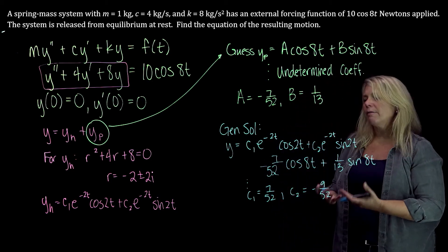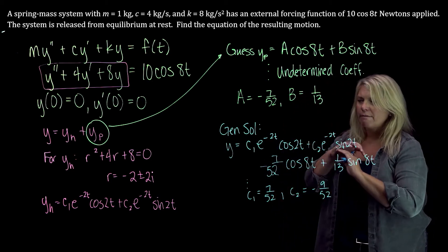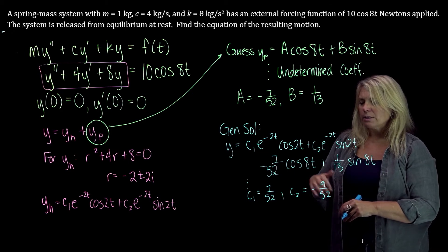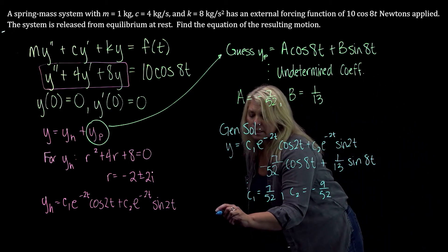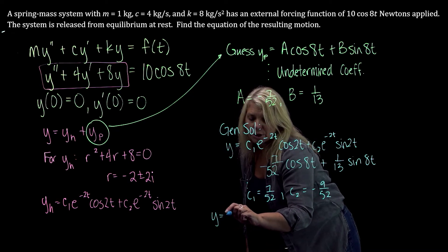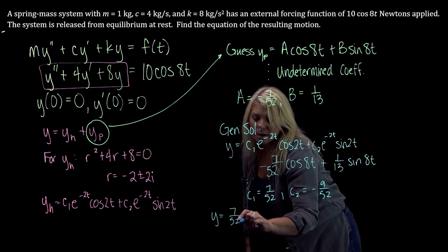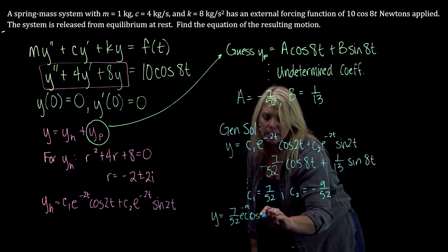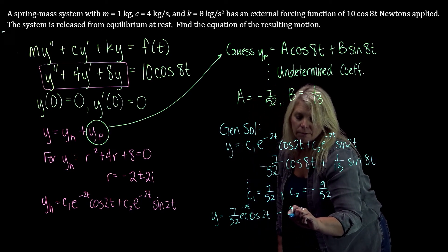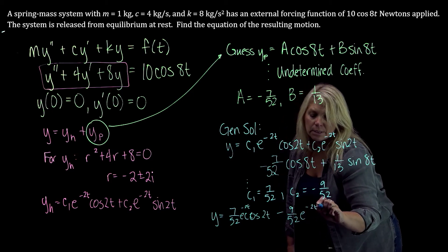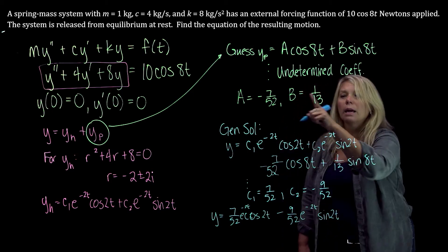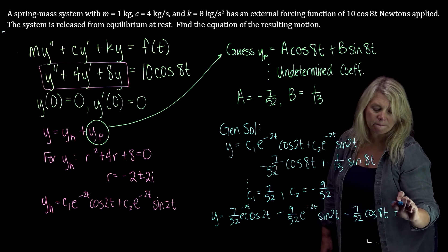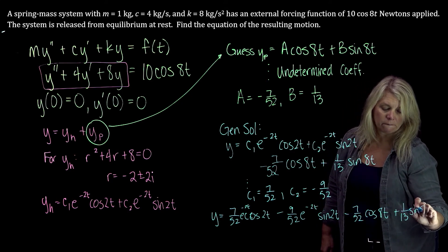Okay, so we know how to do that. We've done that algebra before. You're just finding some derivatives and then you've got a system of equations. You can use the matrix feature on your calculator to solve that system of equations. Alright, so at that point we've got our general solution here with all of our constants: 7 over 52 e to the negative 2t times cosine 2t minus 9 over 52 e to the negative 2t sine 2t and then plus our other part here.